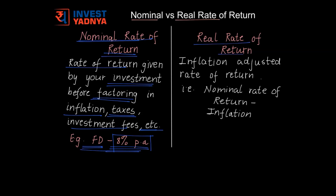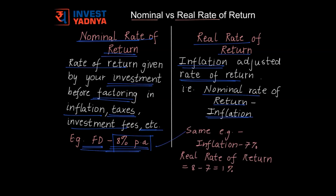Whereas real rate of return is the inflation-adjusted rate of return — that is nothing but nominal rate of return minus inflation. Let us take the same example to understand real rate of return, where your FD is giving you a nominal rate of return of about 8% per annum. If we assume inflation at 7%, the real rate of return would be 8% minus 7%, which gives you 1%. So your money has grown by 1% after factoring in inflation.